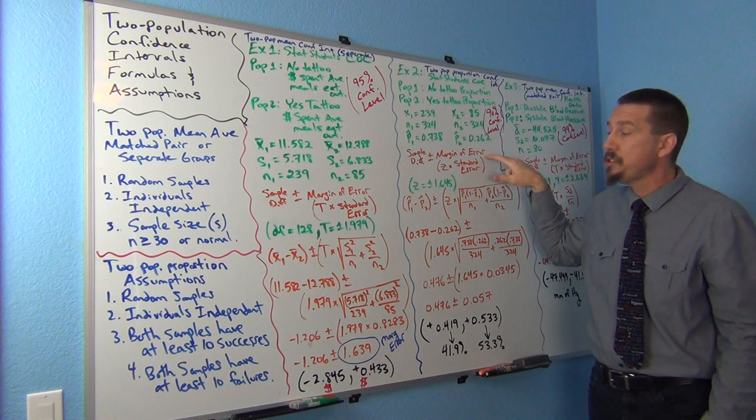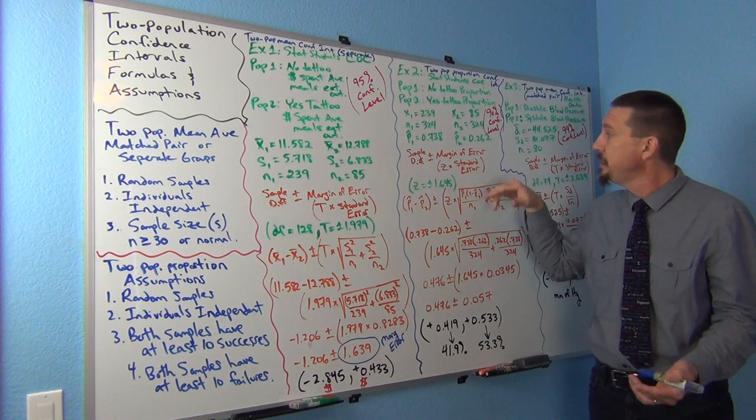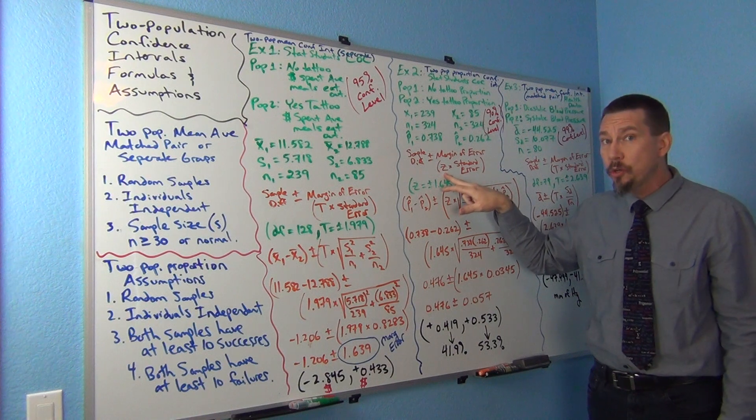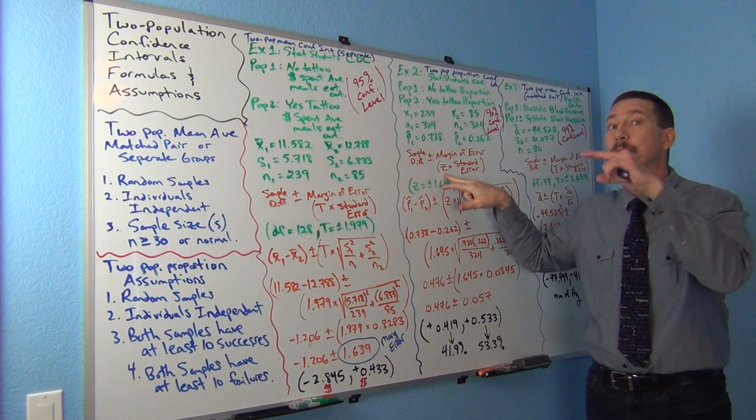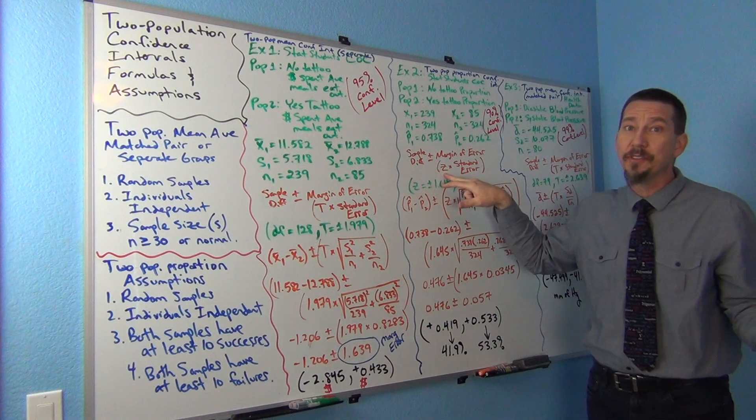The confidence interval formula is the difference plus or minus the margin of error. Same formula we've gone over in the past. The margin of error uses the z-score now, not the t-score. Remember, we usually use z-scores for proportions, t-scores for means.